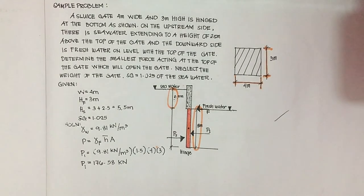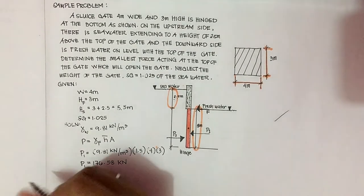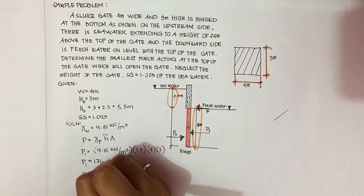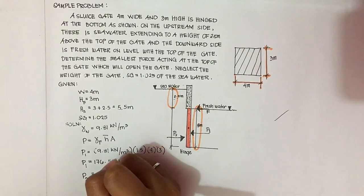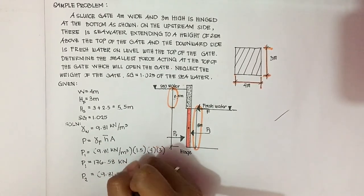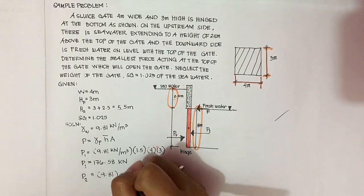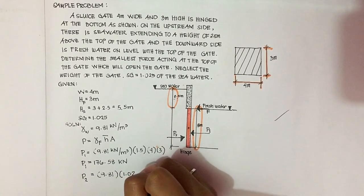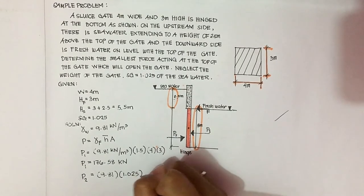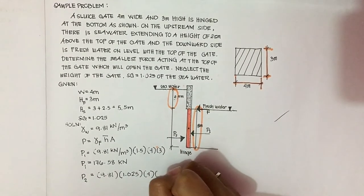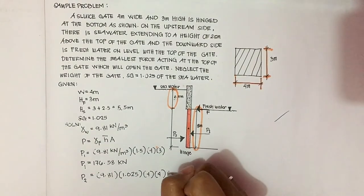Next, let's find the pressure of seawater. Substitute gamma-fluid as 9.81 multiplied by the specific gravity of 1.025, H-bar as 4 meters, and area as 4 times 3. The pressure of seawater is 482.652 kilonewtons.